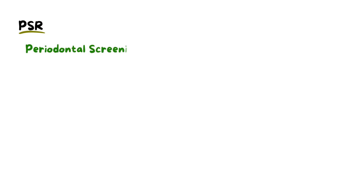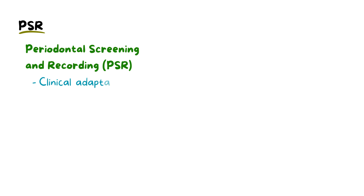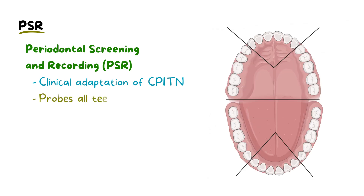On the other hand, we have Periodontal Screening and Recording, or PSR. This tool is a clinical adaptation of the CPITN, designed specifically for individual patient screenings, and is probably the more relevant one. In contrast to CPITN, PSR involves examining all the teeth in each sextant, providing a more comprehensive individual assessment. It uses a similar 0 to 4 scoring system, focusing on the immediate periodontal care required for the patient.